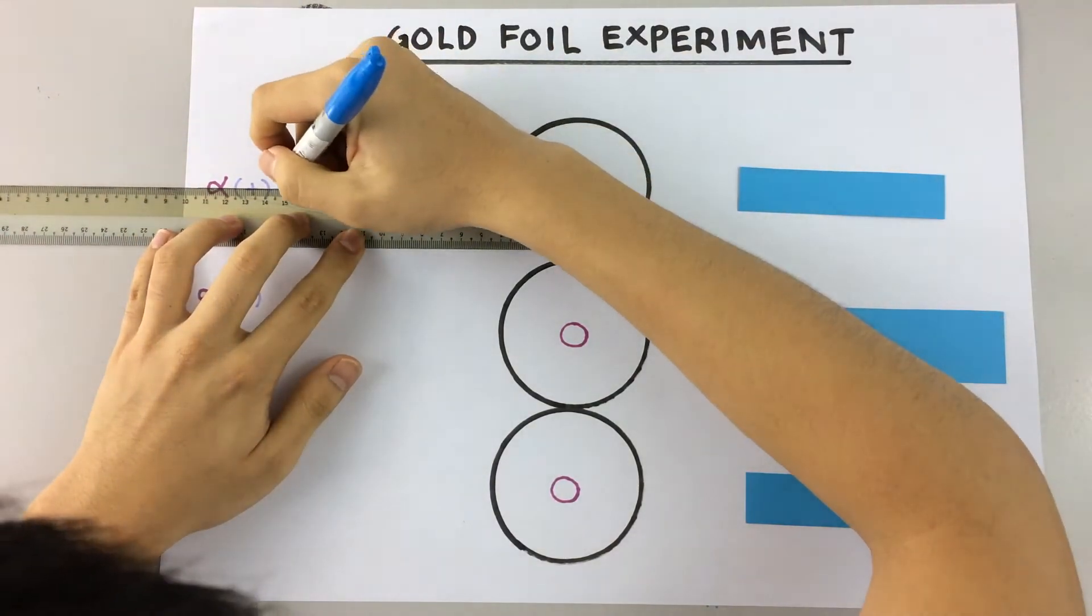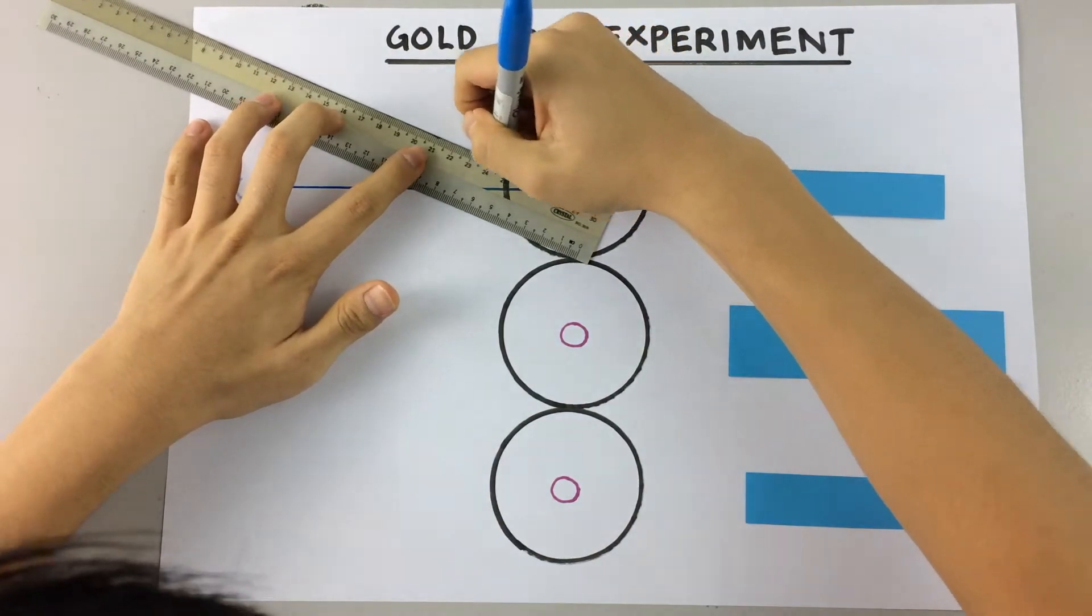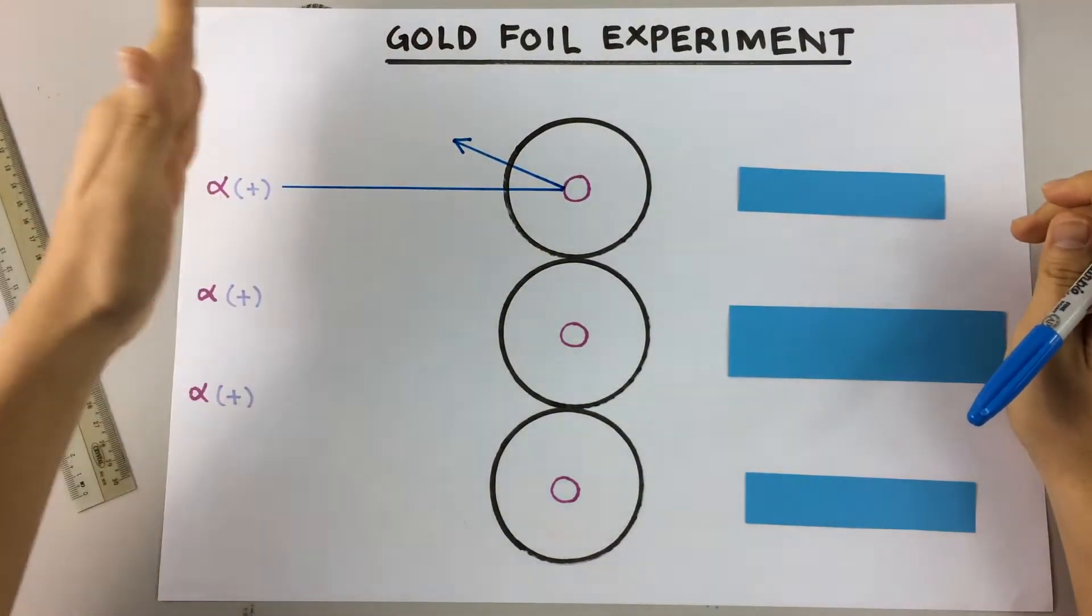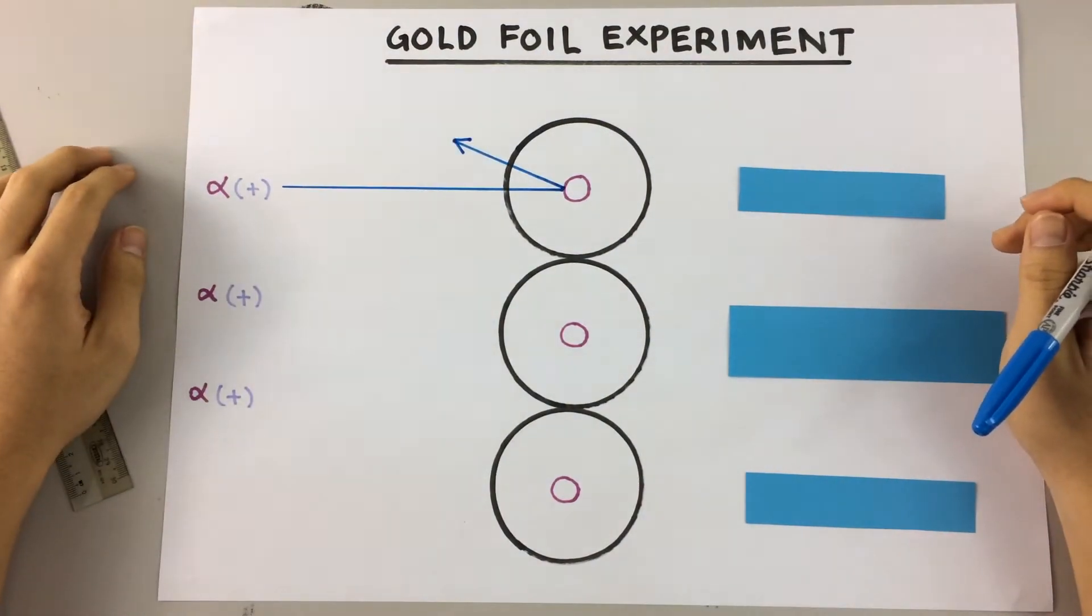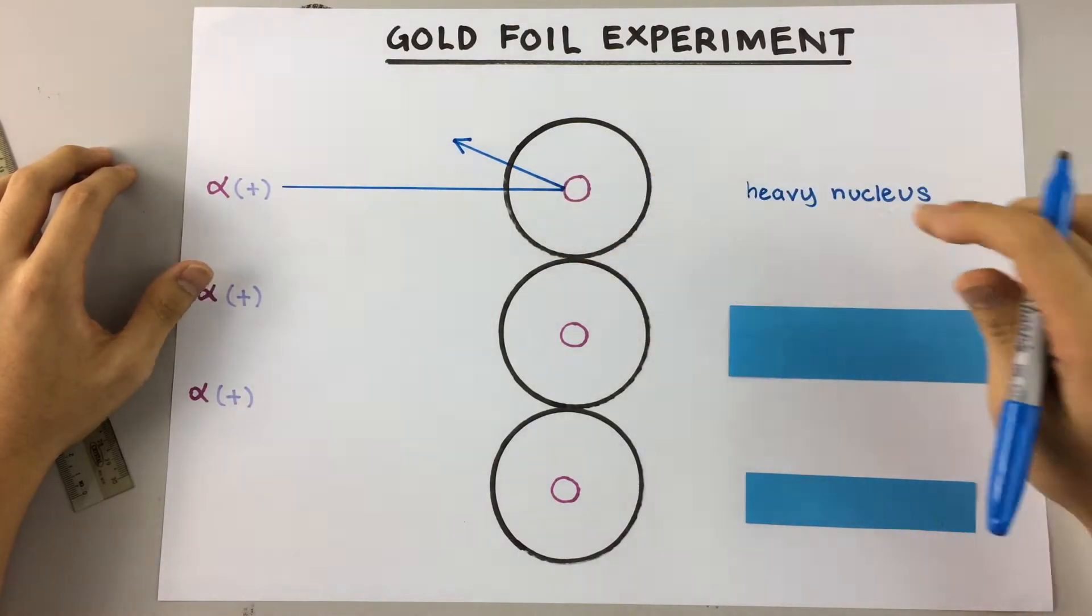Now one of the first things he observes when he shoots these alpha particles into this gold foil is that a few of them bounce back or in proper terms deflect by more than 90 degrees. Now what does this prove? Well, it proves that this atom has a heavy nucleus which is much smaller than the atom itself.